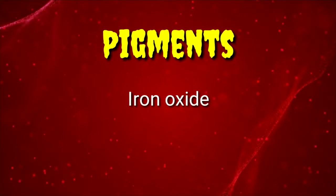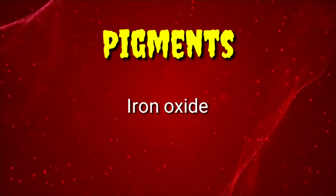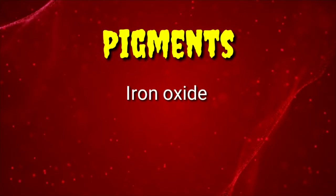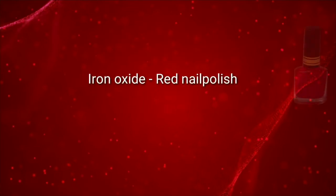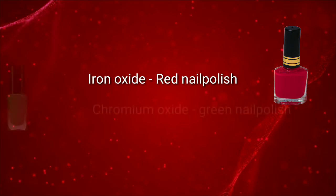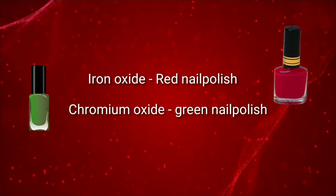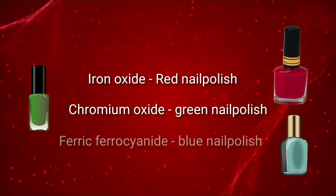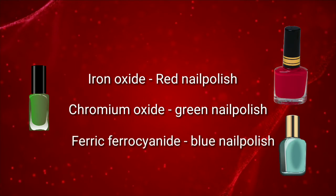Pigments like Iron Oxides and many others are used to add color to nail paint. Iron Oxide red is used to make red nail polish. Chromium Oxide Green and Ferric Ferrocyanide are used to make green and blue color nail polishes respectively.